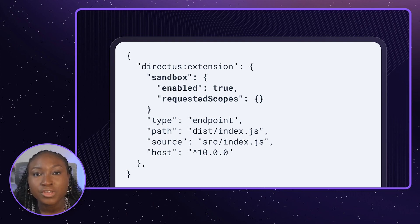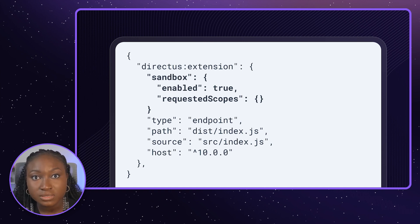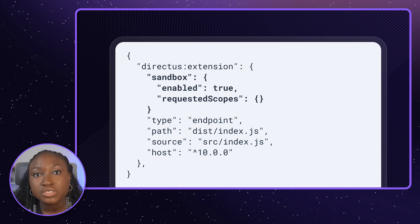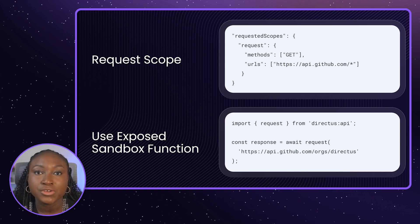For example, the request function allows you to make requests to external services. To use the request function, you need to add permissions for the request scope in your extension's metadata, including which external URLs can be accessed by it.